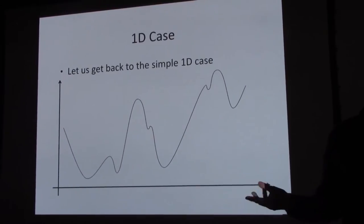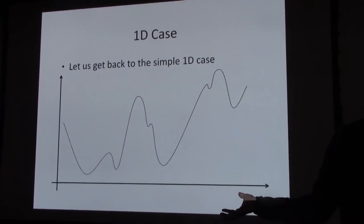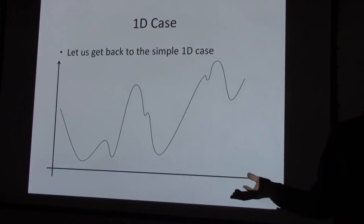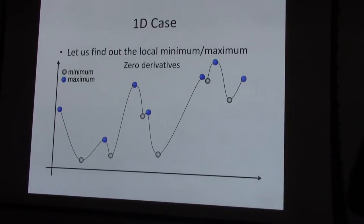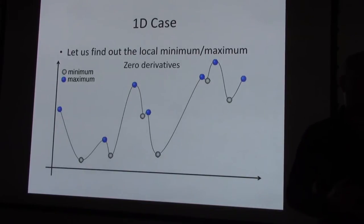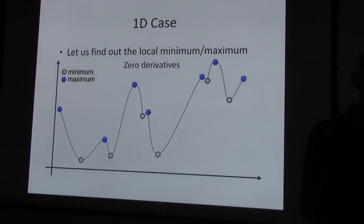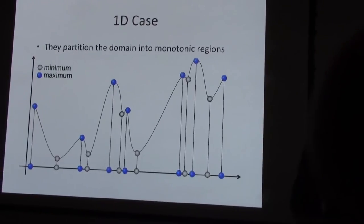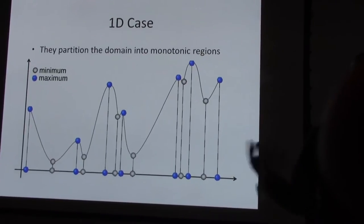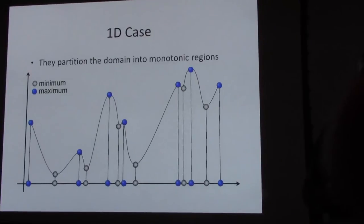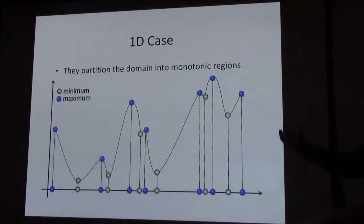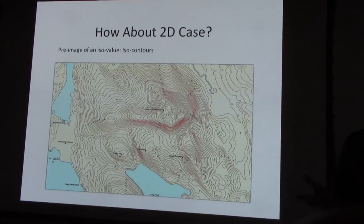Going back to not just 2D but the 1D case — remember we were talking about minima, maxima, and saddle points. In the 1D case these are very easy to find. The minima and maxima are both regions where you have derivative zero, and there are no saddles — you just have minima and maxima in 1D. This partitions the domain into monotonic regions, which means there will be no crossings in between, and you can use this to simplify a 1D plot into something a lot less noisy.